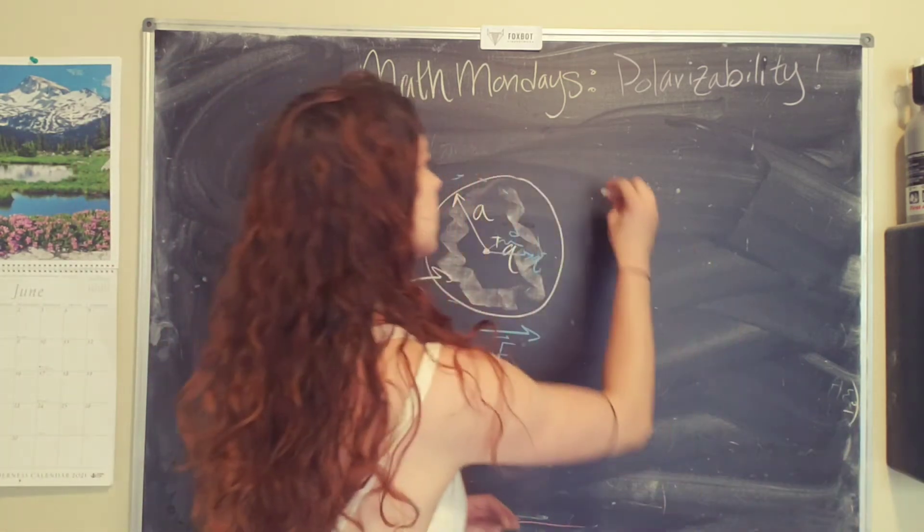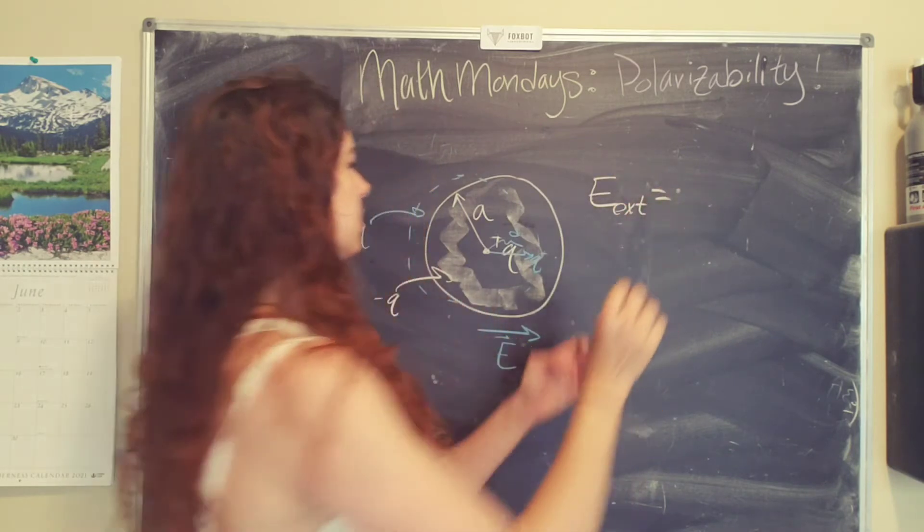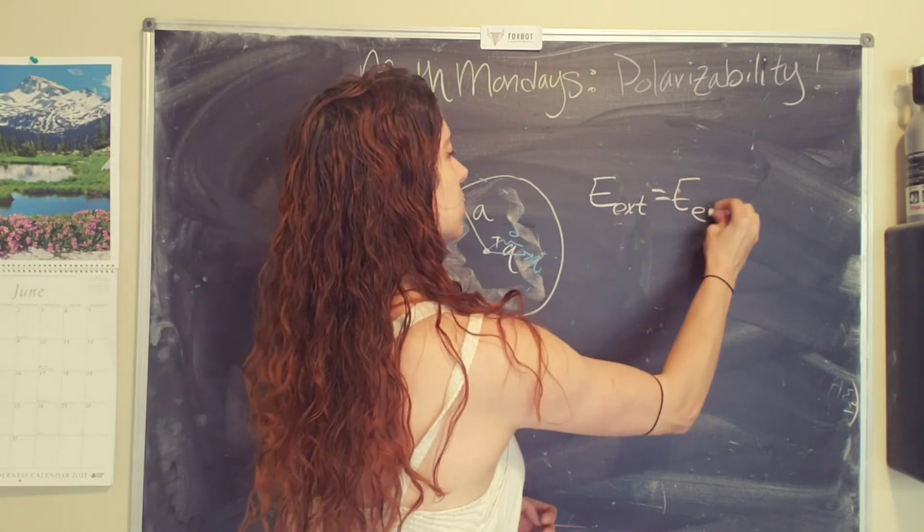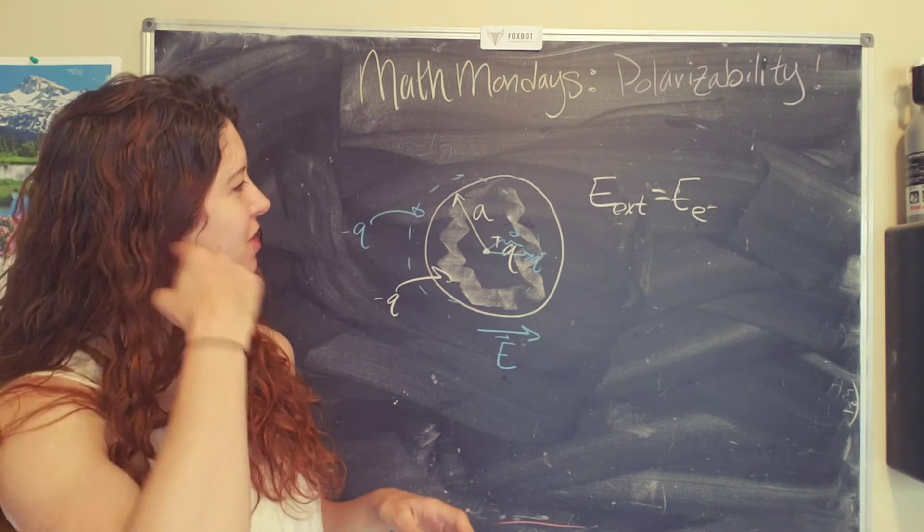I guess I should get my white piece of chalk. The external electric field is equal to the internal electric field, which I'm going to write with a little e negative, which stands for the electron.